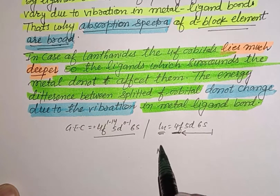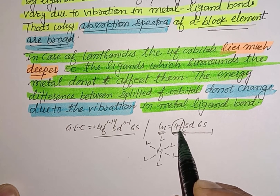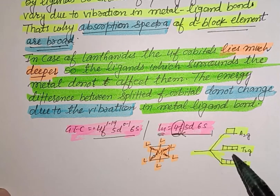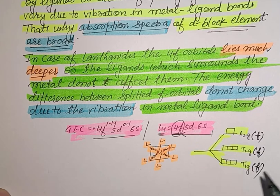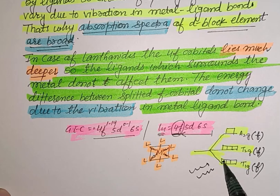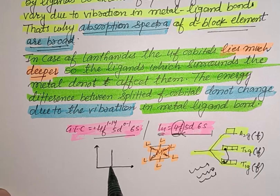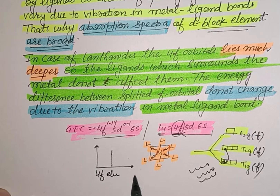Because the 4f orbitals are so deep, the surrounding ligands do not significantly affect the extent of splitting of these f-orbitals when the metal-ligand bond vibrates upon absorption of light. The energy difference between the different f-orbitals does not change due to vibration in the metal-ligand bond. So when light falls on this metal complex, during the f-f transition, only one specific energy is absorbed, giving only one line in the absorption spectrum. That is why the absorption spectrum of lanthanoids and f-block elements is line-like.